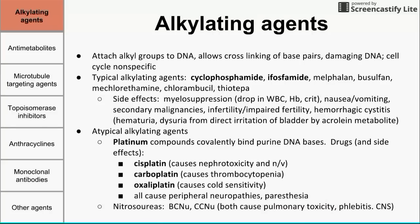The next group of atypical alkylating agents are the nitrosoureas — BCNU and CCNU. The actual names for these drugs have 'mus' in them, like carmustine, because they are related to mustard gas used during one of the world wars. These cause pulmonary toxicity, and it's also worth mentioning they cause phlebitis and central nervous system problems. So those are the alkylating agents.